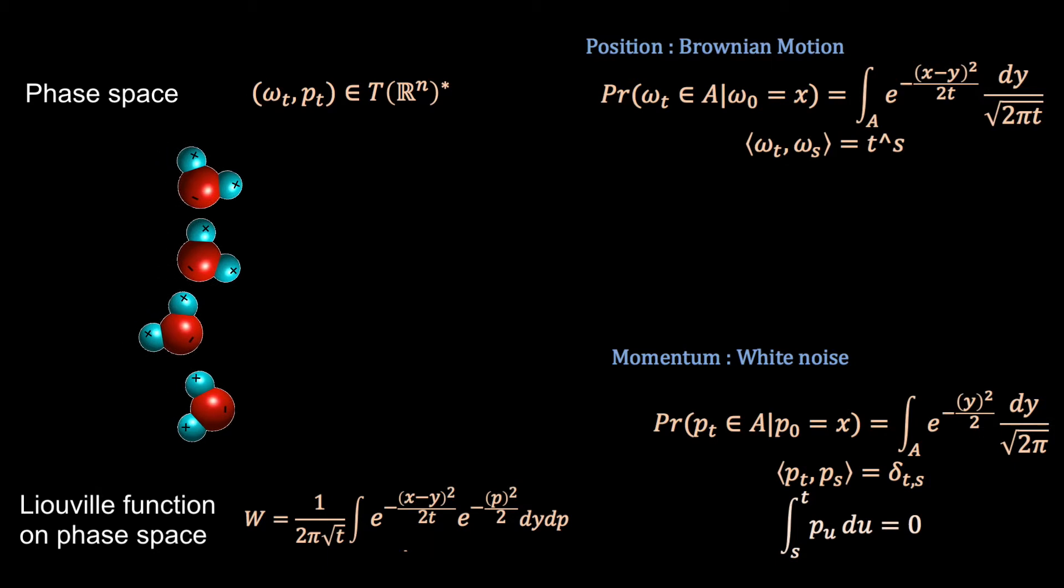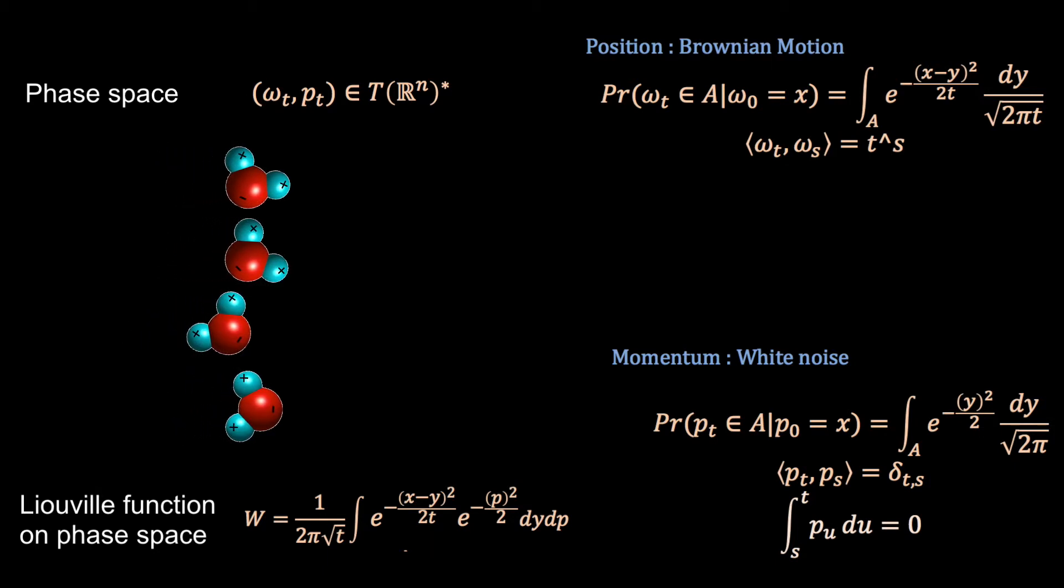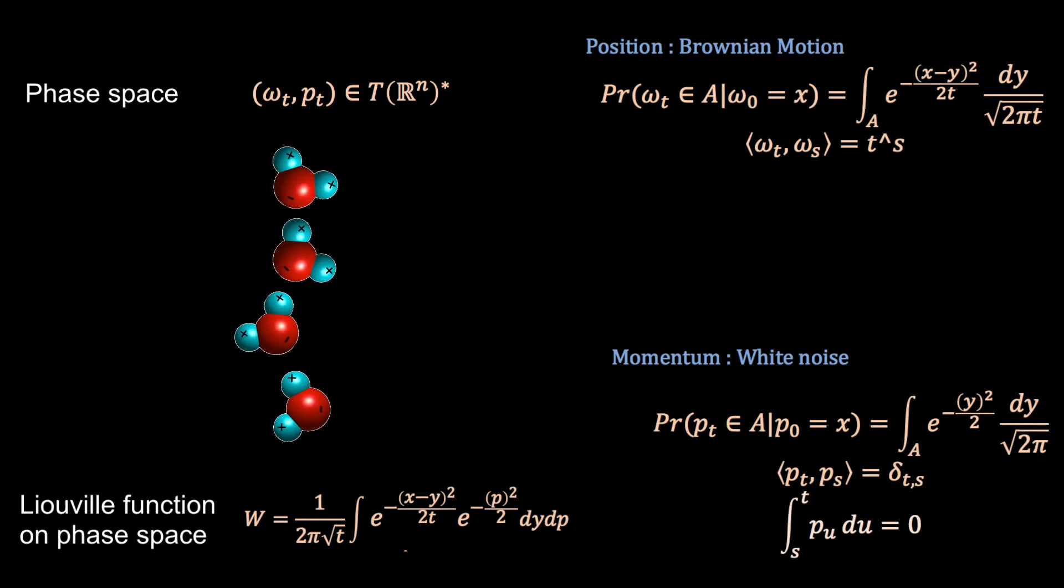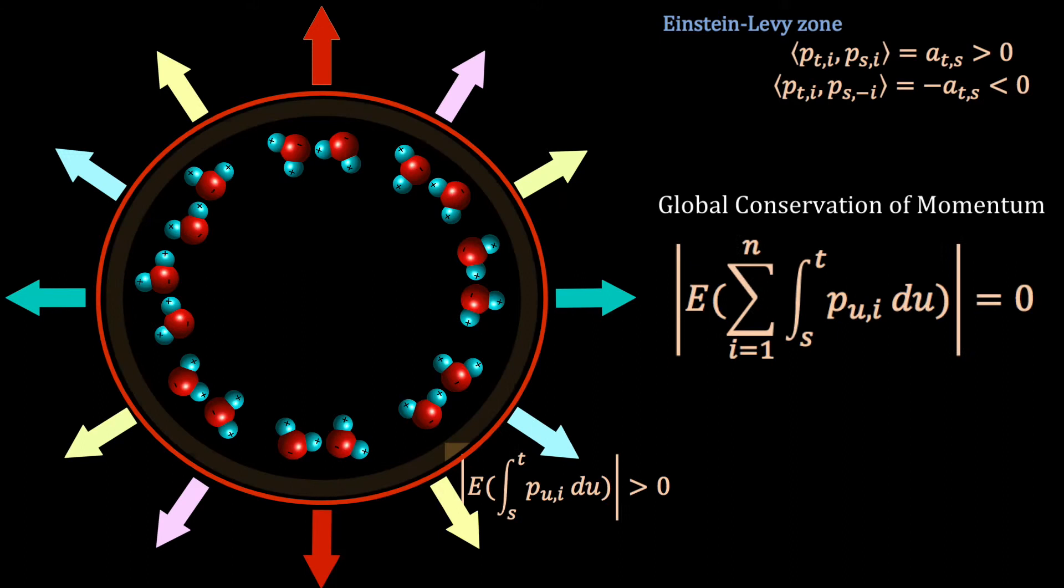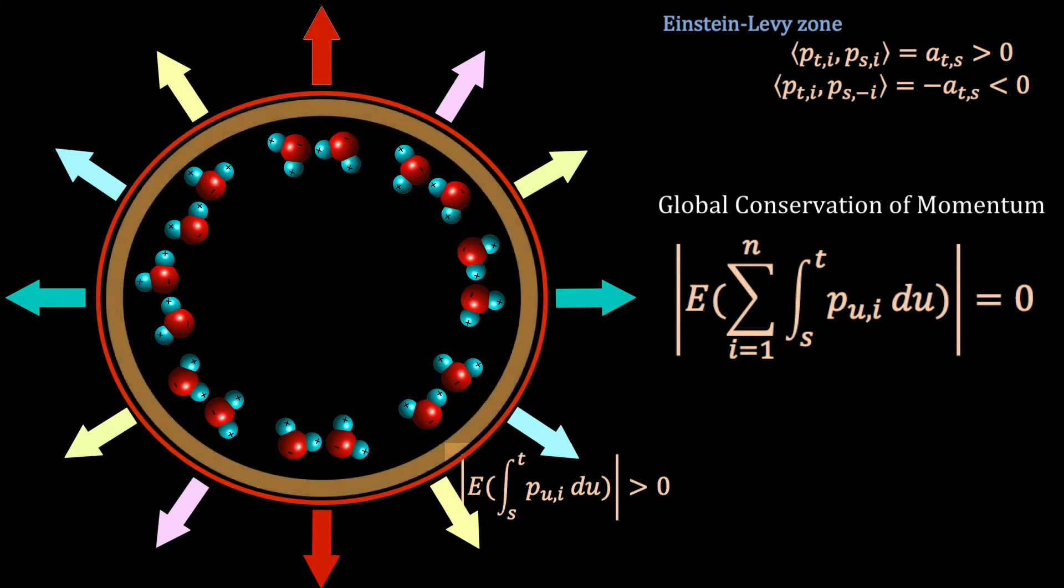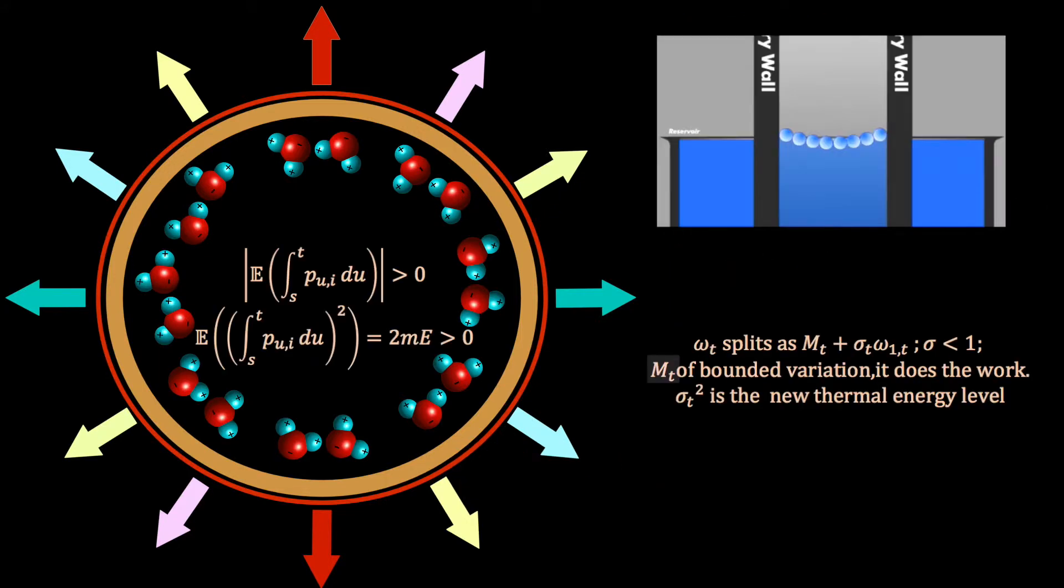Let's look at Einstein's basis for the kinetic theory. Positions Brownian motion. Momentum, white noise in phase space. The conjecture is there is an Einstein-Levy zone that forms between the water molecules and the glass. It is radially symmetric, leading to a global conservation of momentum, effectively a second law in the kinetic theory.